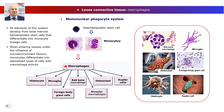The mononuclear phagocyte system also includes bone marrow macrophages, spleen and lymph node macrophages, inflammatory exudate macrophages, alveolar macrophages of the lungs, and microglia of the central nervous system. The characteristics of the structure and function of specialized macrophages from different organs will be studied in the private histology course.